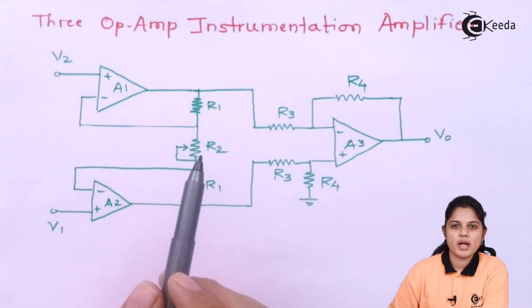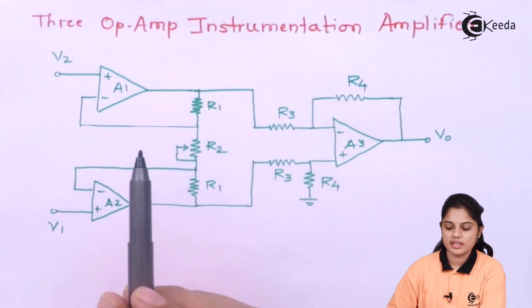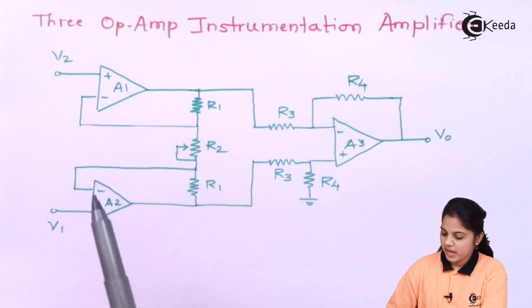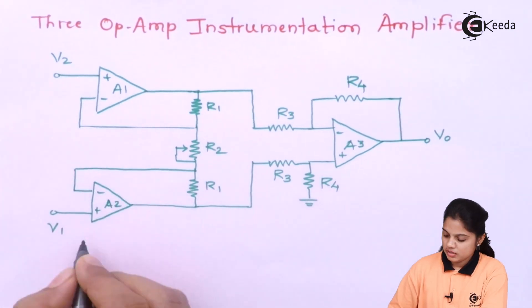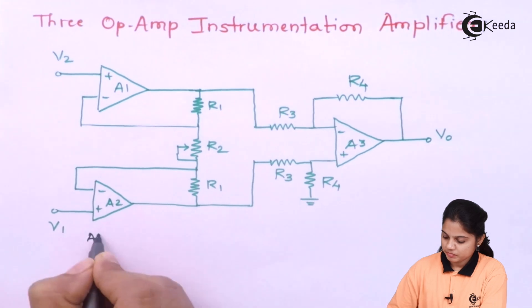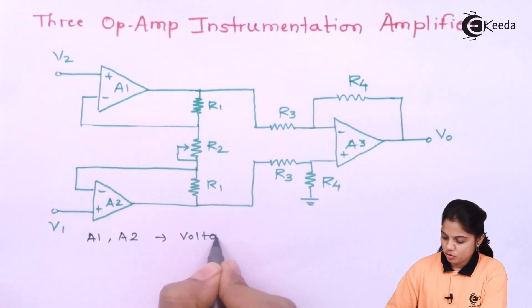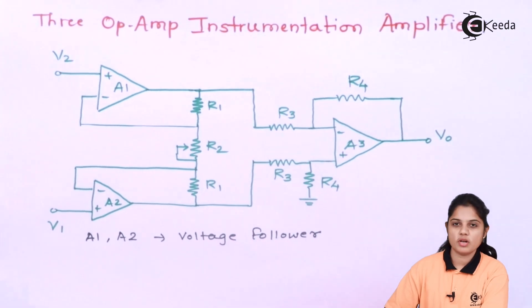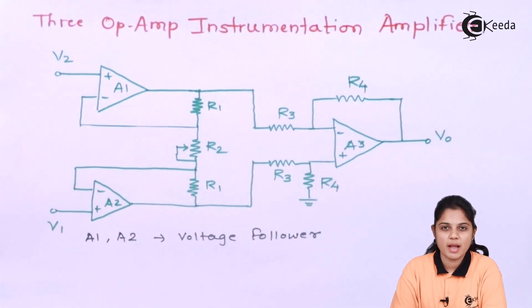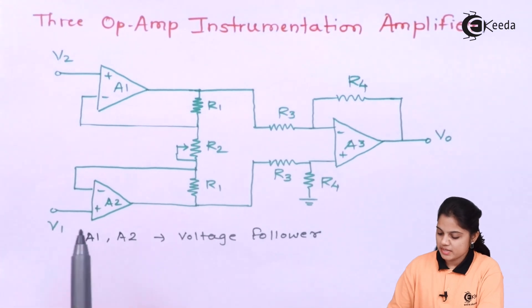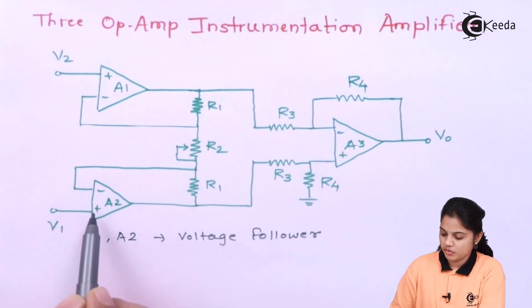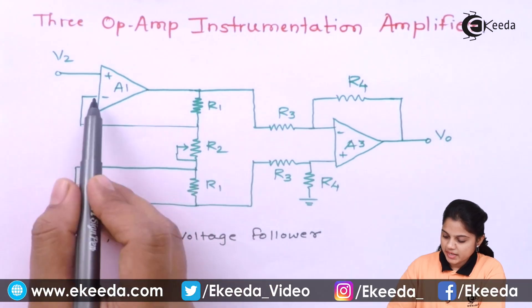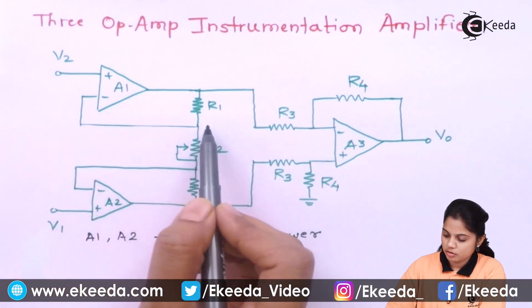Here we have a 3 op-amp instrumentation amplifier circuit diagram where you can see the 3 op-amps are named A1, A2, and A3. A1 and A2 are voltage followers, also known as unity gain buffers, because the gain of the voltage amplifier is equal to 1. V1 is applied to the positive terminal and V2 is applied to the positive terminal.